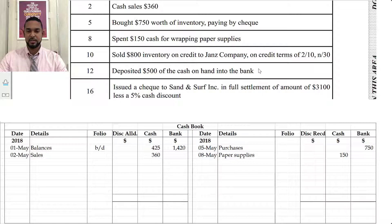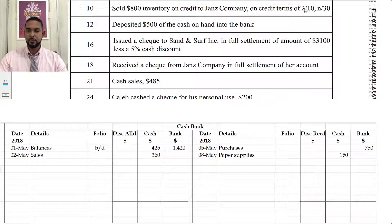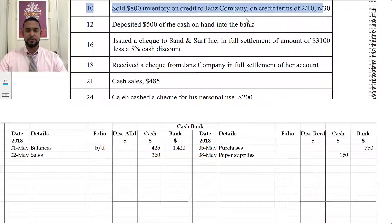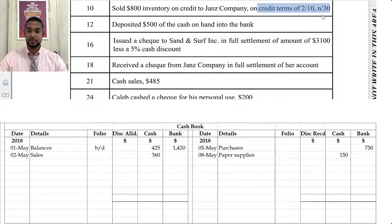On the 10th, Caleb sold $800 of inventory on credit to Jan's company on credit terms 2/10 n/30. If you sold something on credit, that means cash wasn't involved, so this is not going to be recorded in the cash book. The credit terms mean that if Jan's pays back within 10 days, they get a 2% cash discount. If not, they need to pay the full amount within 30 days with no discount.